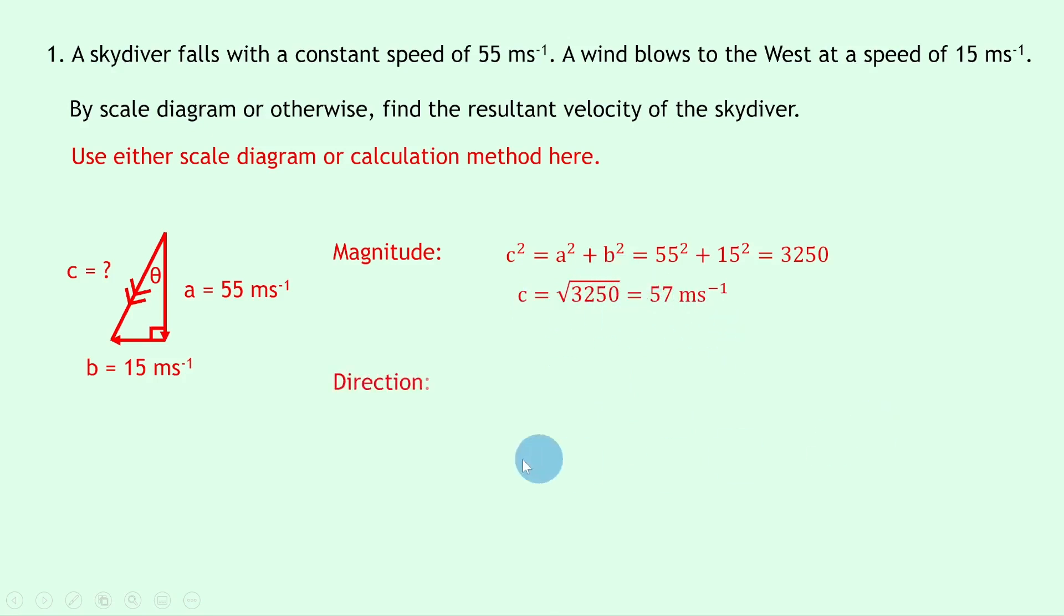To find the direction, remember we start by finding the angle using tan theta equals opposite over adjacent. So opposite the angle we have 15 meters per second, and adjacent to the angle we have 55, so that equals 15 divided by 55, which equals 0.27. Then to find angle theta on its own, you do the inverse tan of 0.27, and putting that into your calculator should give you an answer of roughly 15 degrees.